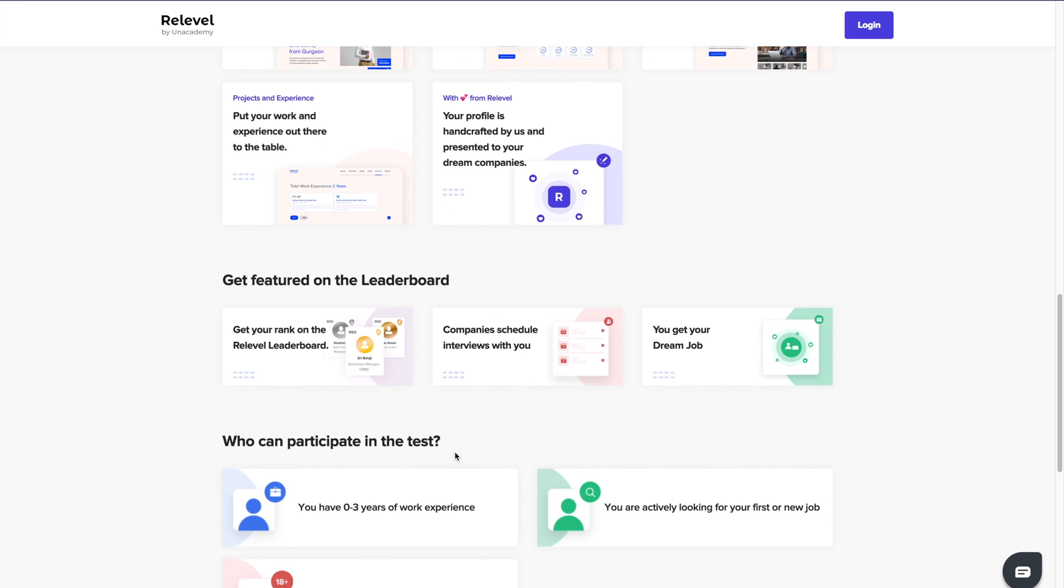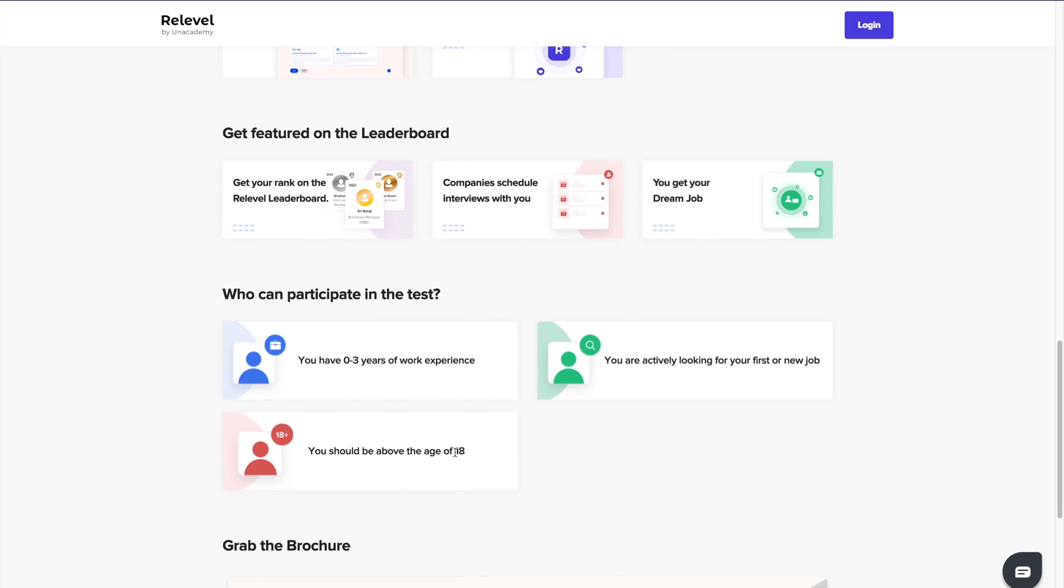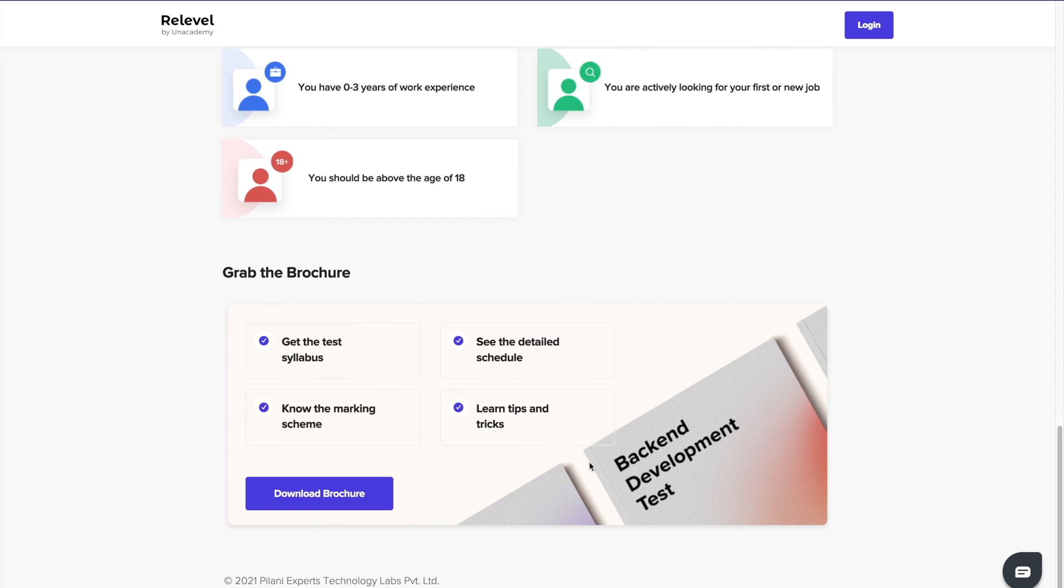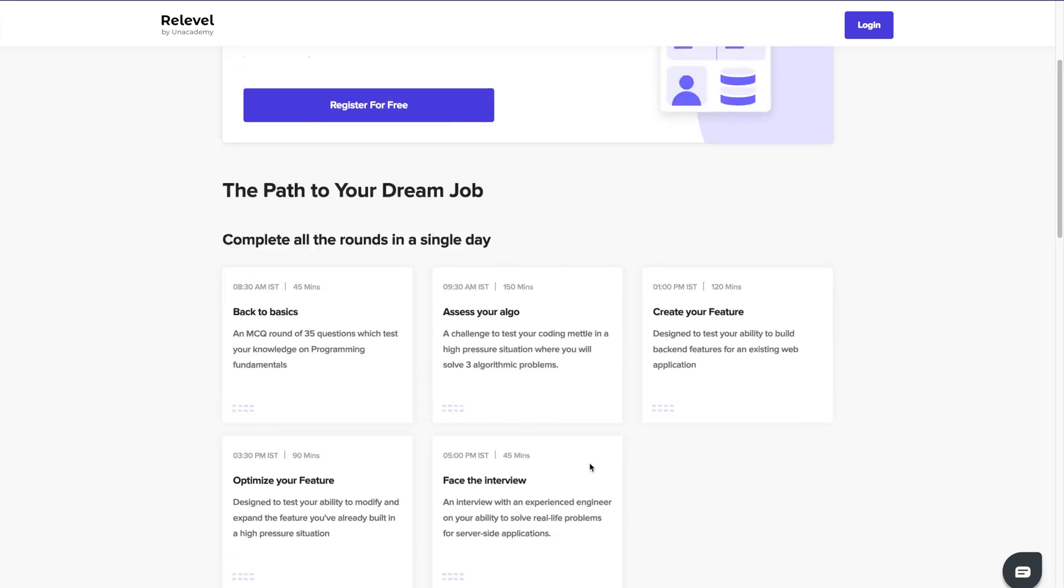All you need is skills. So what you need to do is, you just need to give the Relable test that is completely based on your skills. Depending on your performance, your interview will be scheduled and you will be hired from the Relable platform. And the best thing about this is, it's absolutely free. So what are you waiting for? Please make sure you check out the links in the description.